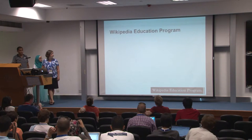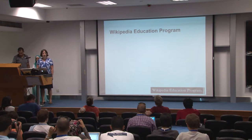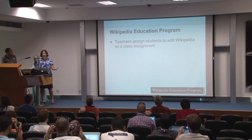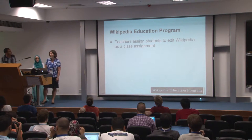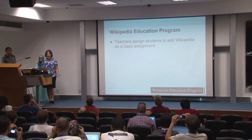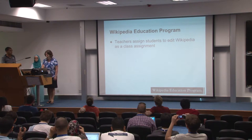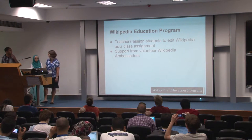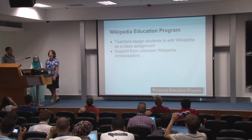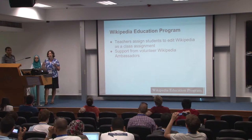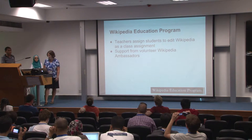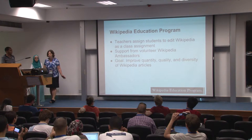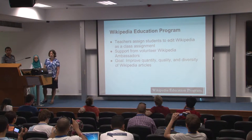I want to talk very briefly about the Wikipedia Education Program for those who may not be familiar with it. The basic idea is pretty simple: teachers assign students to edit Wikipedia as part of a class assignment. Then volunteers from our community support these students as Wikipedia ambassadors, either in the class as campus ambassadors or online as online ambassadors. Our goal is to improve the quantity, quality, and diversity of Wikipedia articles.